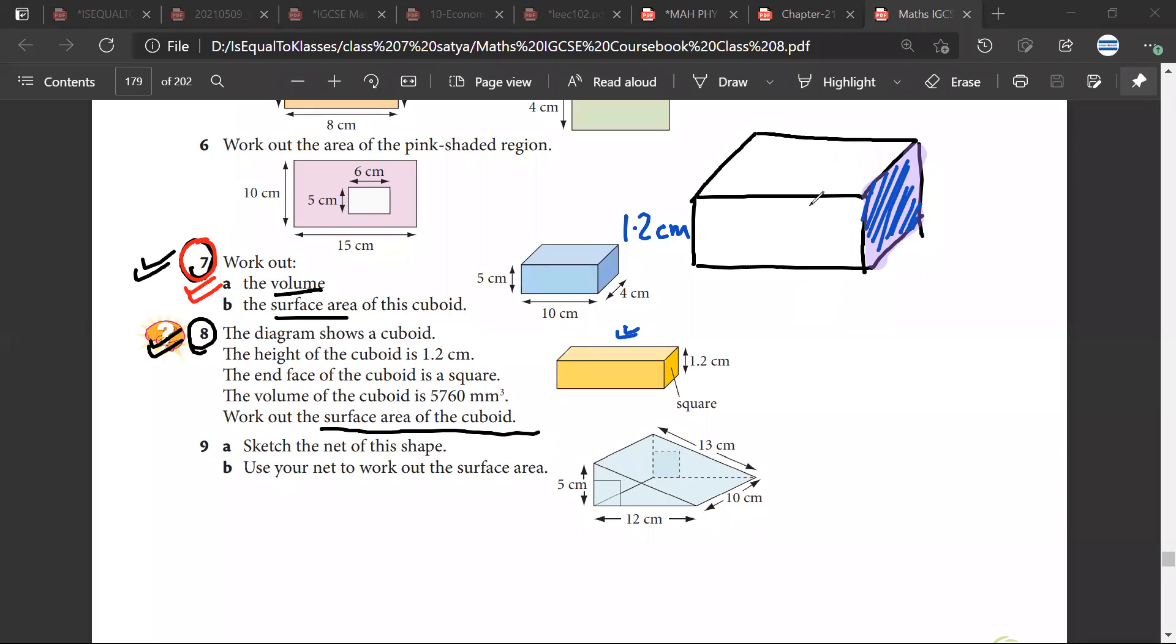So the height is 1.2, so this would be 1.2 centimeter. So Sarthak, what would this be if this is a square? So 1.2 centimeters. Very nice.